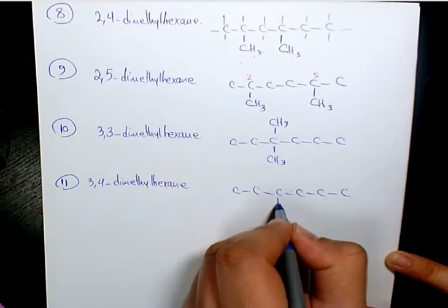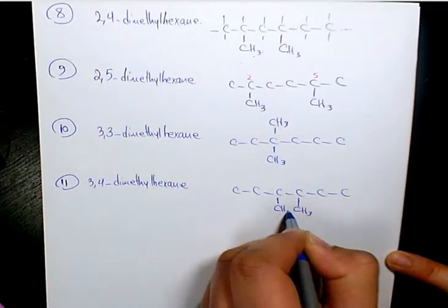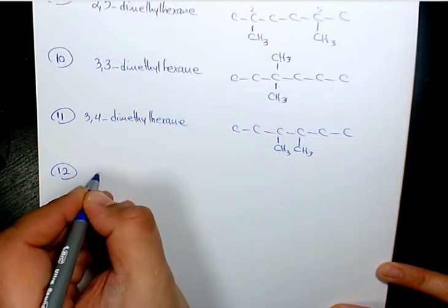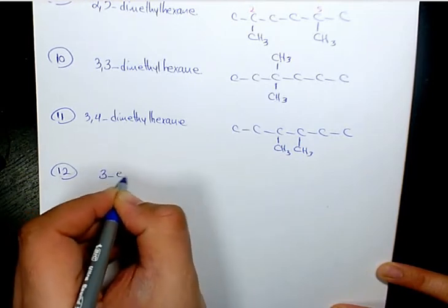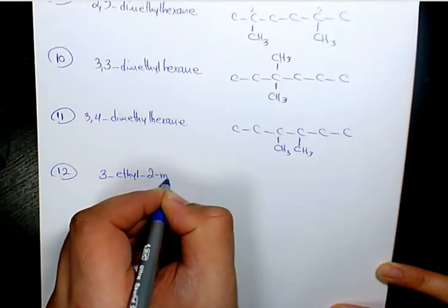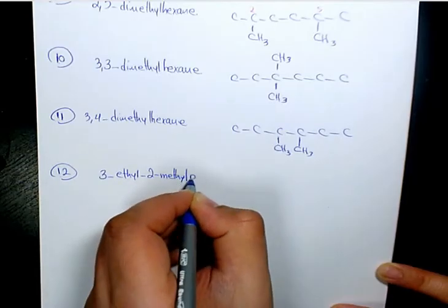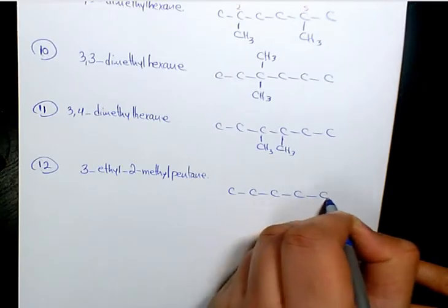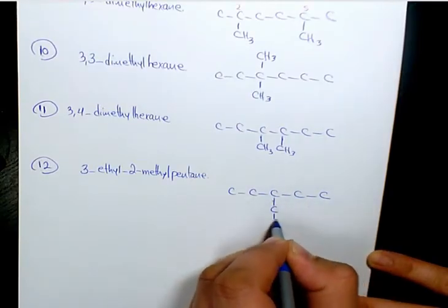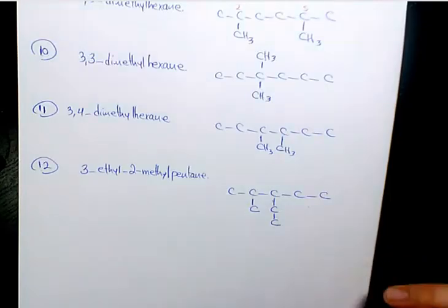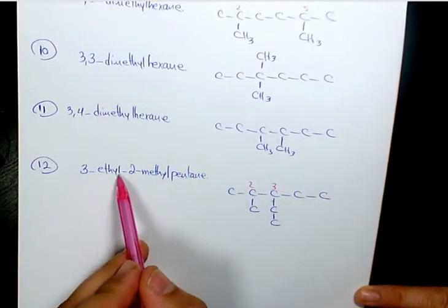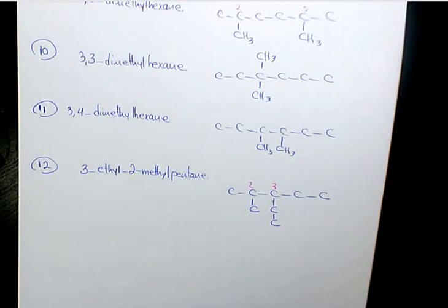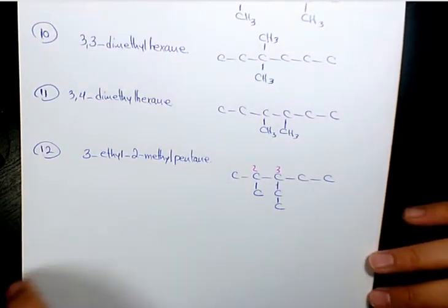Number twelve is 3-ethyl-2-methylpentane. We have five carbons on the main chain, an ethyl group on the third carbon and a methyl group on the second carbon. Ethyl comes first because 'E' comes before 'M' in alphabetical order. That's why we have 3-ethyl-2-methylpentane.